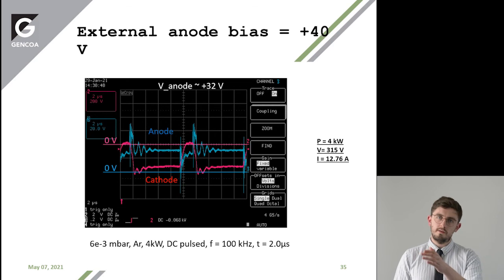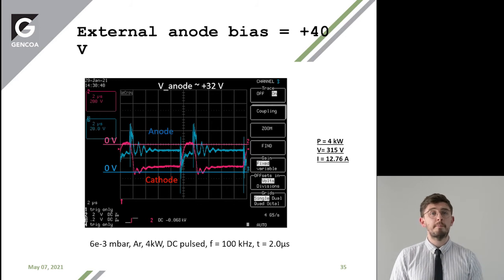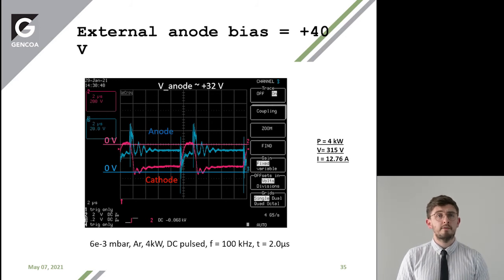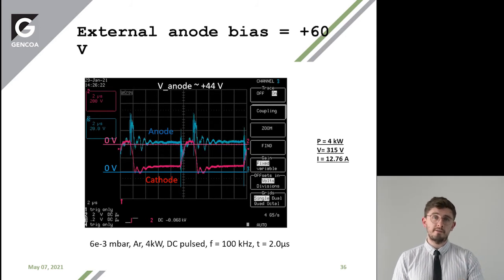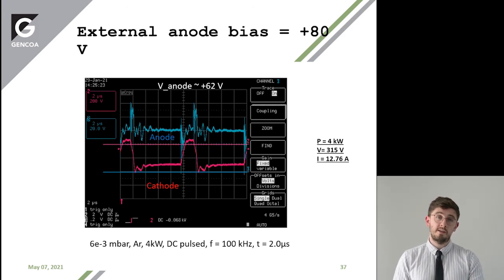I can take you through different anode biases to show it was done stably — four kilowatts, about 13 amps in your plasma. As we increase the anode bias from 40 to 60 and up to 80 volts, the blue is the anode voltage and the pink is the cathode voltage.